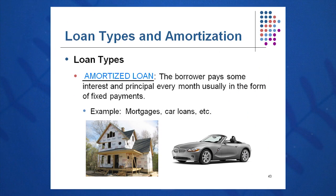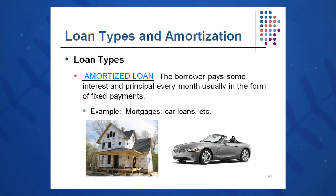A third very common type of loan you may encounter is when you buy a house or a car: an amortized loan. You pay some interest and principal every single month in the form of a total fixed payment — the same amount each month. But that may consist of $982 of interest and $18 of principal in the early months, then reverse that in the later months and years of the loan. That's what we call an amortized loan.